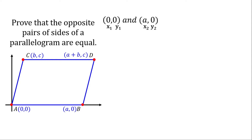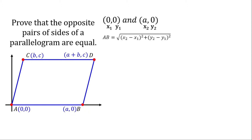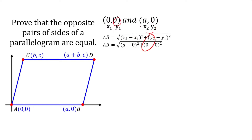Let's deal with the first side, segment AB at coordinates 0,0. We'll be using the distance formula. Write the distance formula and set up the values. x sub 2 is A and x sub 1 is 0, then we have 0 minus 0. That will give us this equation.